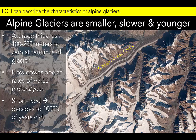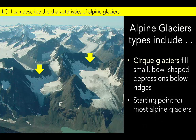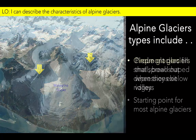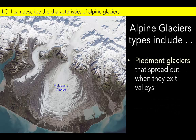Not all alpine glaciers are as impressive as the Aletsch Glacier. Some are much smaller, like the cirque glaciers in the Chugach Mountains of Alaska. Some glaciers expand as they exit a valley to form wider Piedmont glaciers, like the Malaspina Glacier in Alaska.